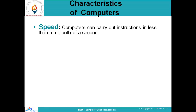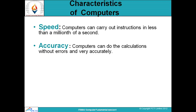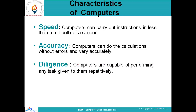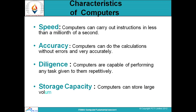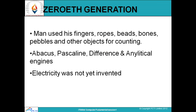We will now learn about the different characteristics of computers. Computers are required because we need speed — doing calculations manually takes a lot of time, whereas computers speed things up. We need them for accuracy, because computers do not make errors the way humans do in manual calculations. We need them for diligence, as they perform tasks repeatedly and quickly. They also have a large storage capacity — information is stored in memory, which can be external or internal.